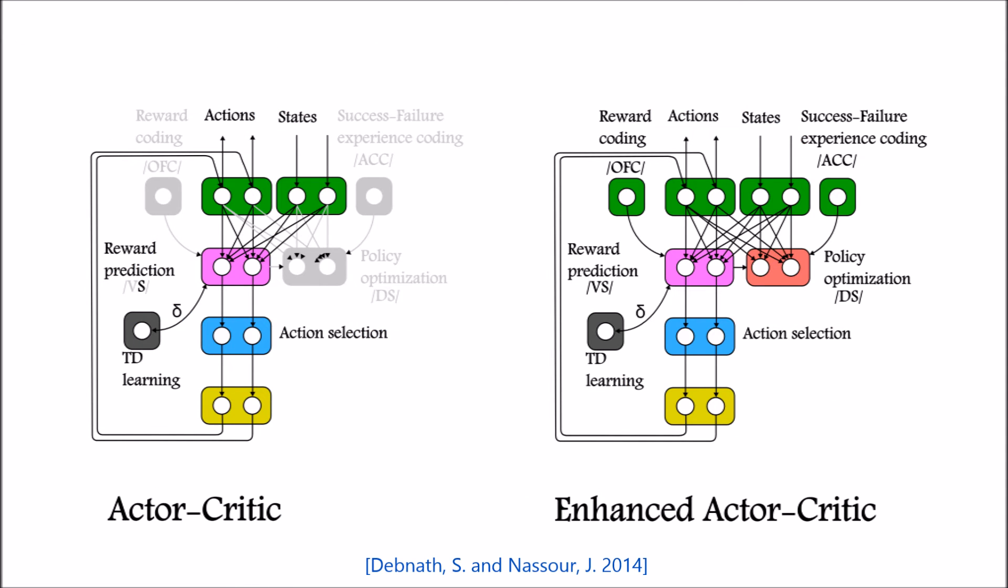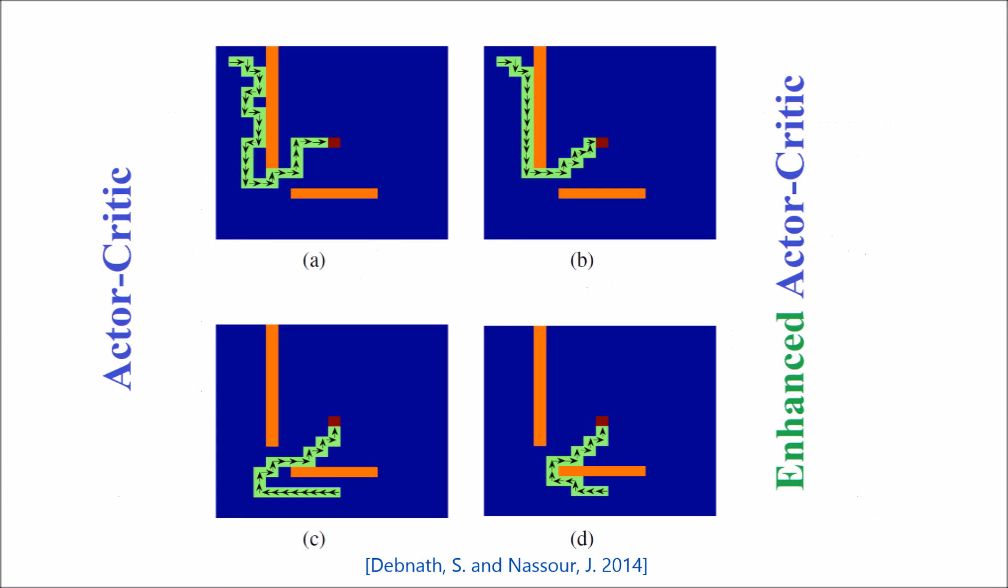Both actor-critic and enhanced actor-critic methods were applied to two different problems. The first one was a 2D grid world problem where an agent had to reach a goal with obstacles in its path. For both methods, 200 experiment trials were carried out. Each time, the agent started from a random position and the goal was to reach the center of the grid.